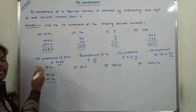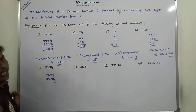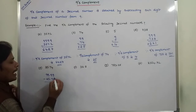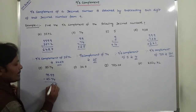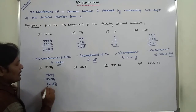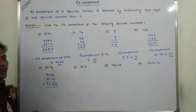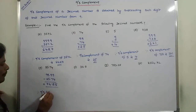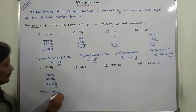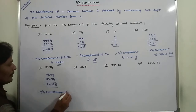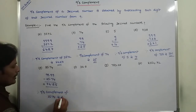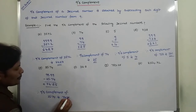Each and every digit is subtracted from 9, before and after the decimal point. 9 minus 4 is 5, 9 minus 7 is 2, 9 minus 5 is 4, 9 minus 2 is 7. So the result is 74.25. Therefore, the 9's complement of 25.74 is 74.25.